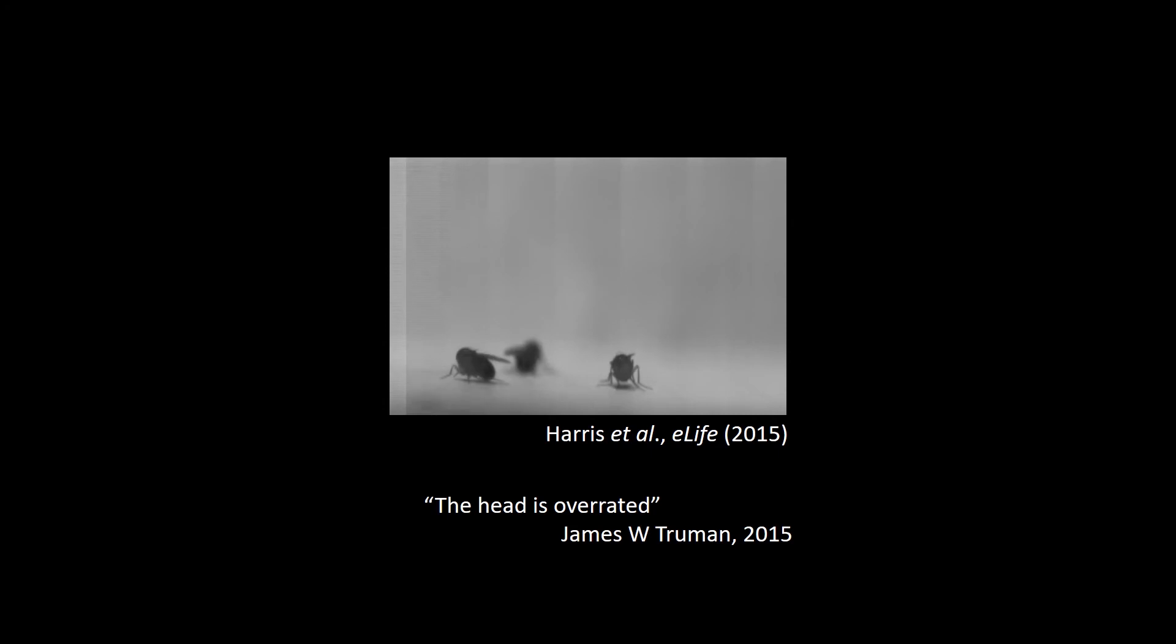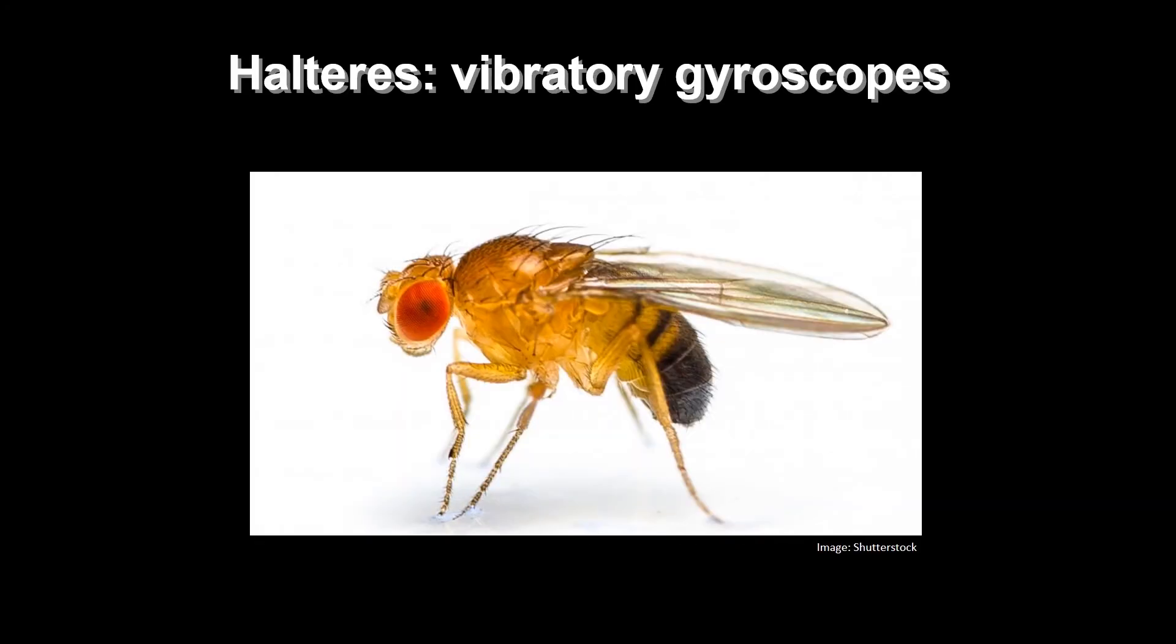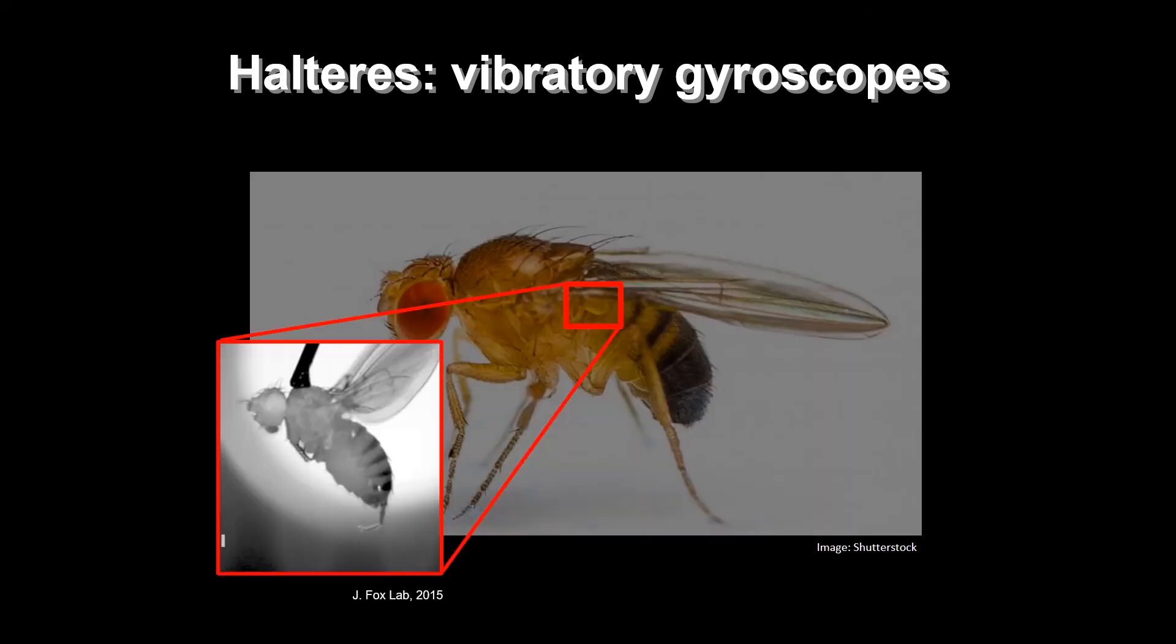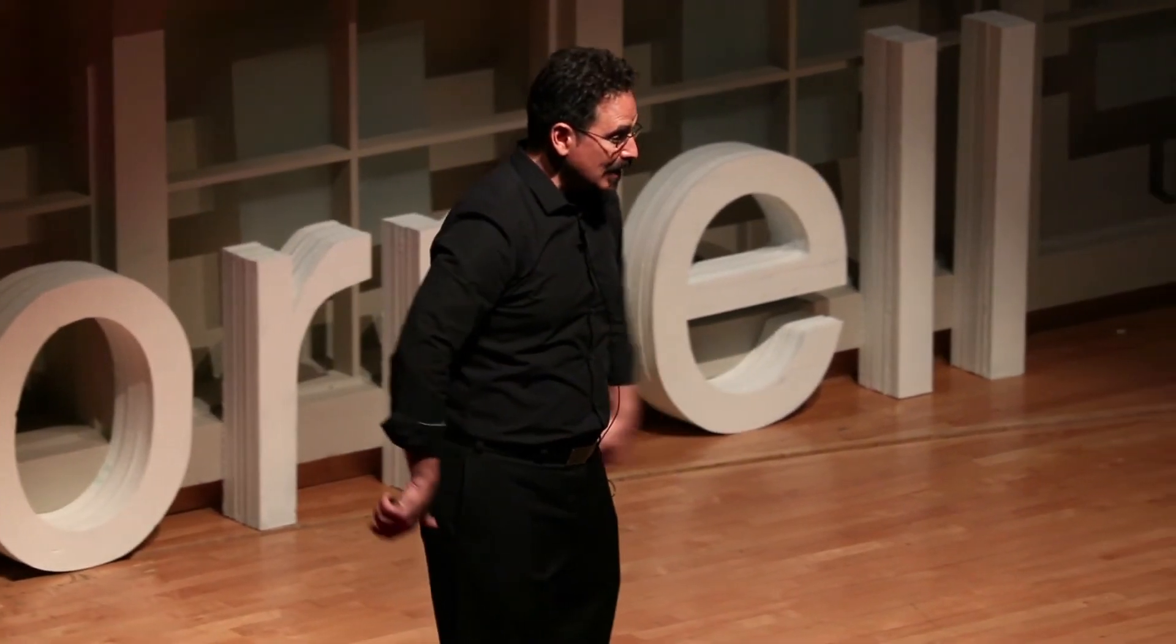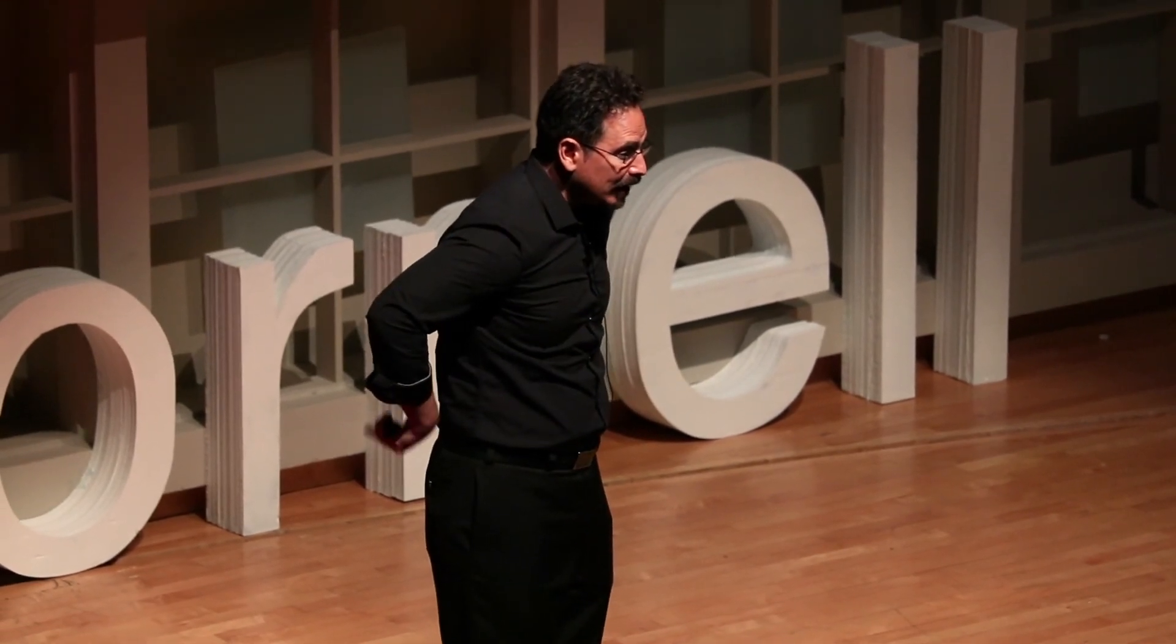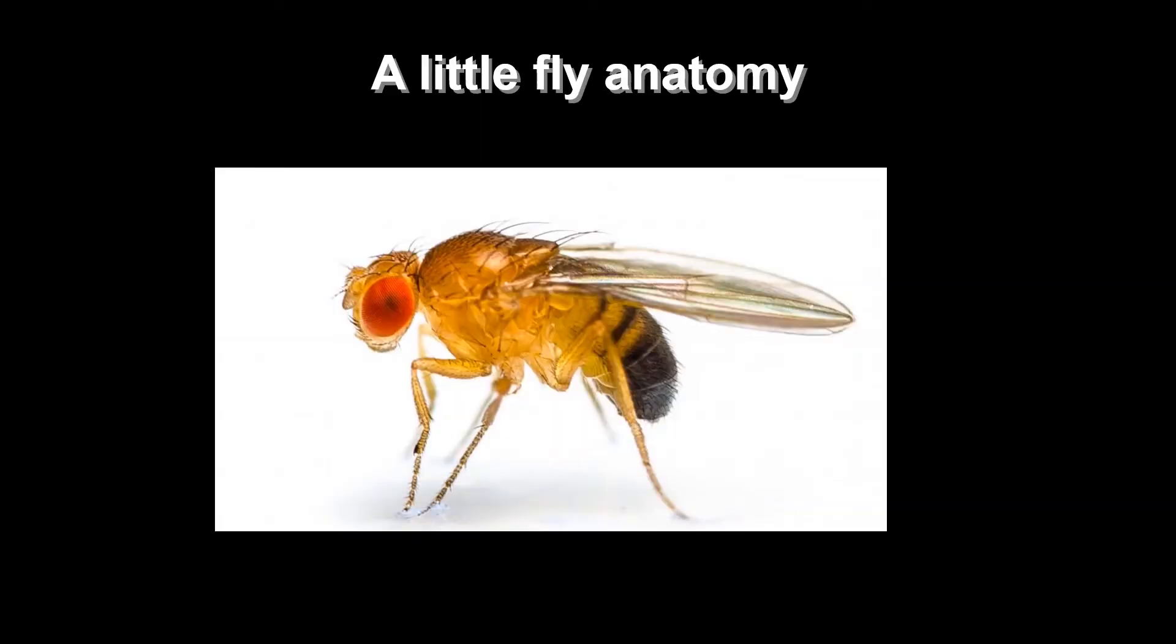These flies have something called a vibratory gyroscope on their back. All diptera used to have four wings. But the hind two wings became short and stubbly little things called halteres. There they are. And this is what they look like when they're flapping. They go back and forth like little sticks. And when the fly rotates, they get left behind. And there are little nerves at the bottom of the halteres on something called a campaniform that sense when the halteres are being deflected. And then that information gets sent up through a neural circuit in the back of the fly to the steering muscles that are then controlling the wings.